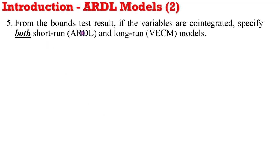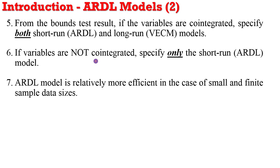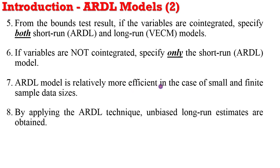From the results of your bounds test, if the variables are cointegrated, you have to specify both the short-run model — which is the ARDL — and the long-run model, which will be the vector error correction or the error correction model as the case may be. But if the variables are not cointegrated, you can only specify the short-run ARDL model. One of the advantages of using the ARDL model is that it is more efficient when you have a small sample size, and you will obtain unbiased long-run estimates.